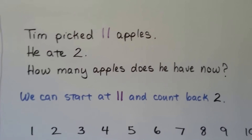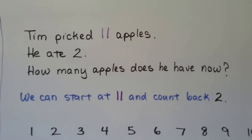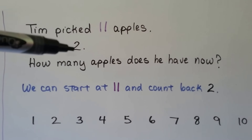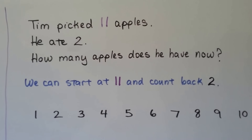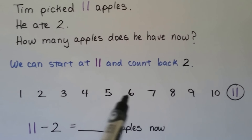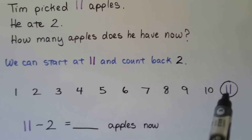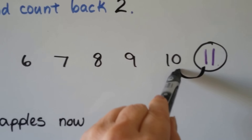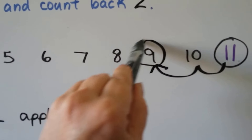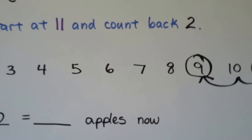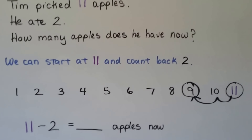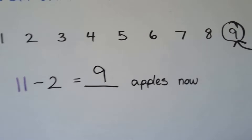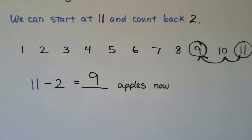Tim picked 11 apples. He ate 2. How many apples does he have now? We can start at 11 and count back 2. Starting at 11 and going back 2 puts us at 9. If he picked 11 apples and ate 2, that means he has 9 apples now. 11 minus 2 is equal to 9.